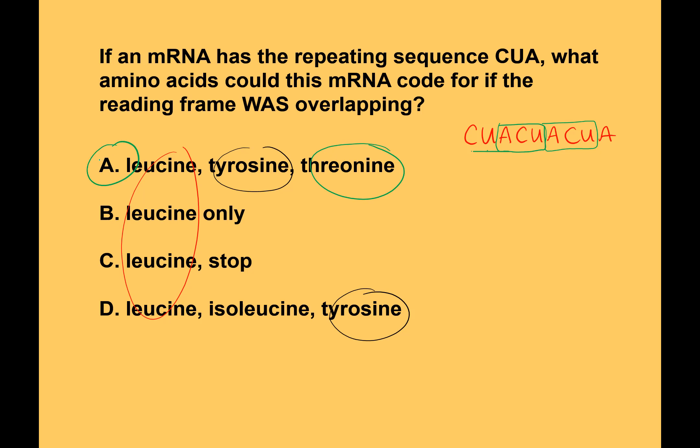So the answer is A. If you read the beginning of the textbook, it talks about how the codon table was figured out — basically using these different repeating sequences of nucleotides to figure out which codons corresponded to which amino acids.